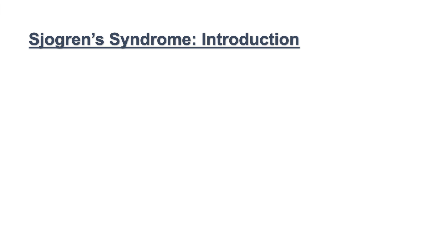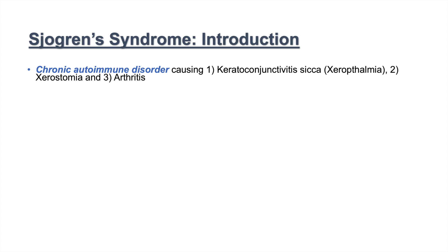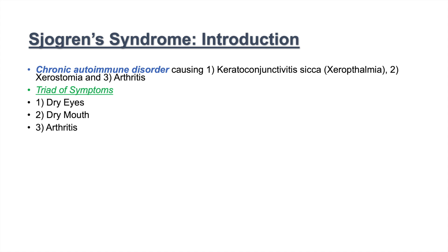Hey everyone, and this is where we're going to talk about Sjogren's syndrome. Sjogren's syndrome is a chronic autoimmune disorder causing three characteristic symptoms. One is keratoconjunctivitis sicca or xerophthalmia, the second is xerostomia, and the third is arthritis — a triad of dry eyes, dry mouth, and arthritis.